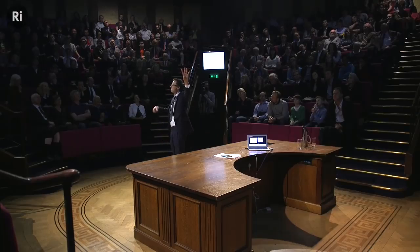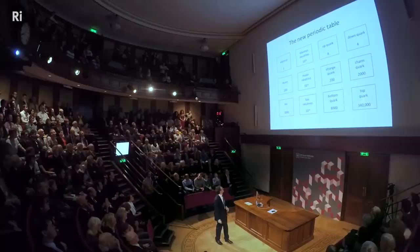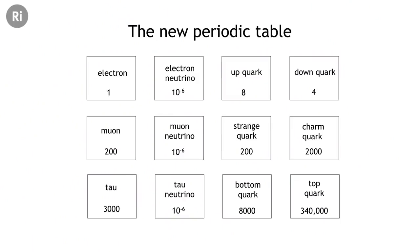Then something rather strange happened: for a reason we do not understand at all, nature has chosen to take these four particles and reproduce them twice over. This is actually the full list of all the fields that make up particles in our universe. There are two other particles that behave in every way exactly the same as the electron except they're heavier — we call them the muon, with a mass of about 200 times the electron, and the tau particle, which is 3,000 times heavier than the electron. Why are they there? We have no idea at all — it's one of the mysteries of the universe.